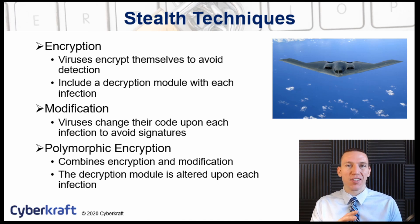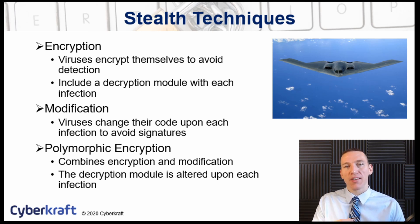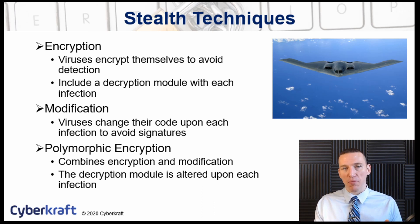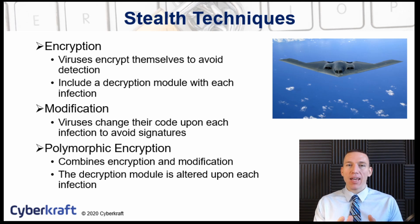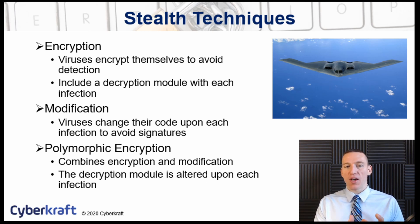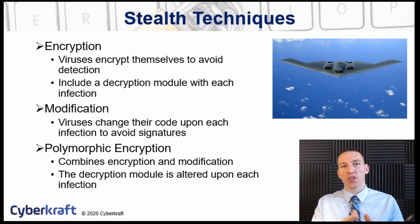The modification technique is when the virus modifies its own code to prevent itself from appearing as an antivirus signature. Many antivirus programs are signature-based — a signature is a pattern that represents what a virus looks like — so the virus rewrites its own code to avoid that signature detection. Polymorphic encryption combines the encryption technique and the modification technique: the virus not only encrypts itself with an encryption and decryption module, but that module is modified and altered with each infection, so the code is both changing and encrypted at the same time.